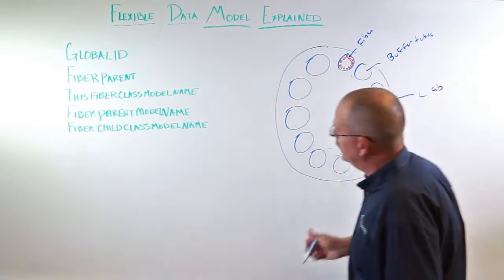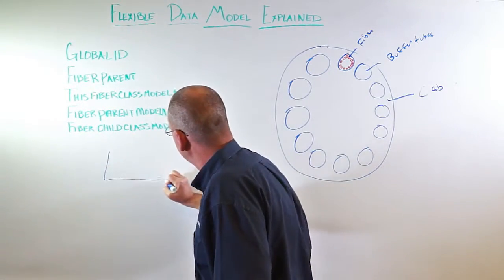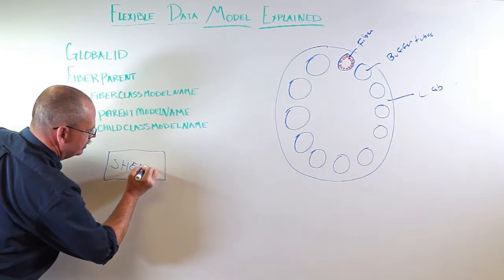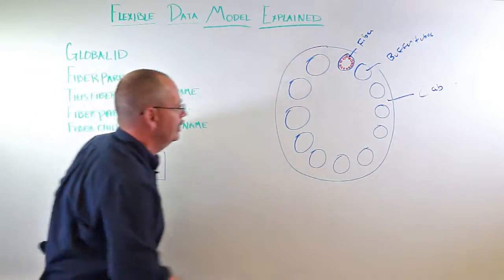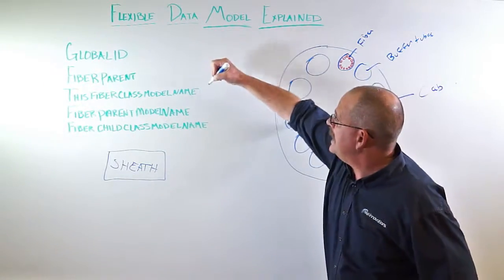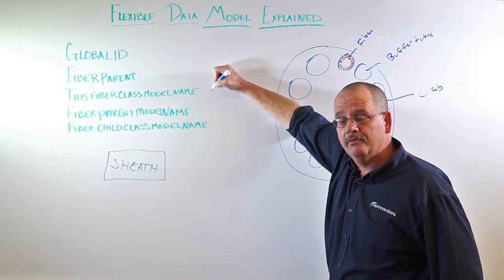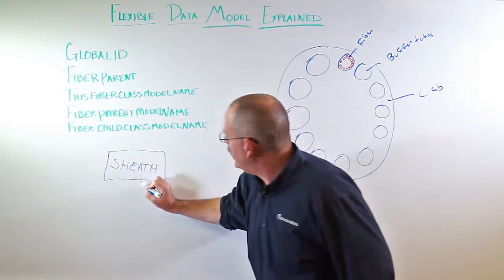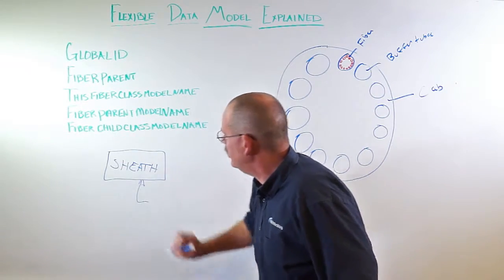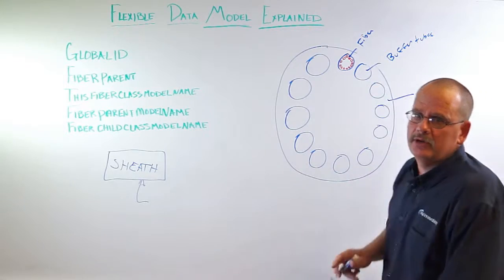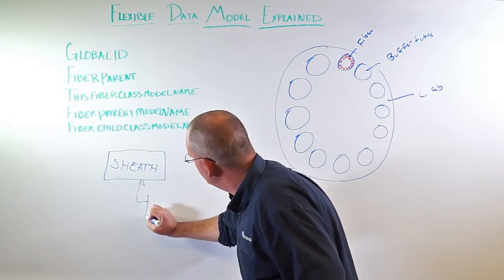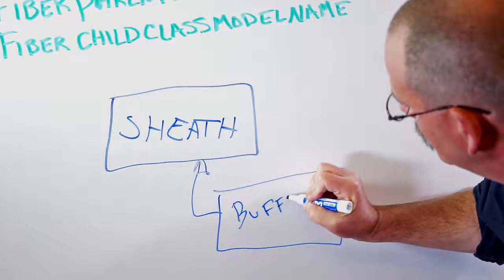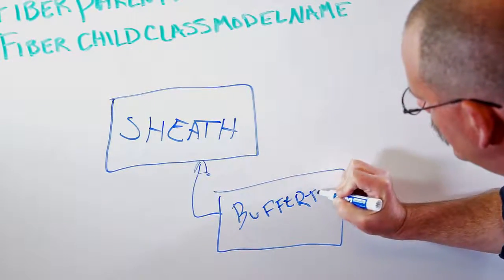From our cable, the out of the box model has the model name of sheath. So the ESRI default value for this fiber class model name is sheath. The child, as we've already talked about, which is the buffer tube. So the model name for buffer tube is actually buffer tube.